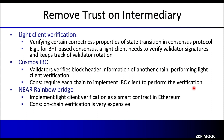Another approach is to implement this light client verification directly in a smart contract, as long as the chain supports smart contracts. For example, the NEAR Rainbow Bridge implements light client verification as a smart contract on Ethereum. The advantage is that this approach can be applied to any chain supporting smart contracts. However, the disadvantage is that on-chain verification can be very expensive — in the NEAR Rainbow Bridge case, this on-chain verification is prohibitively expensive.